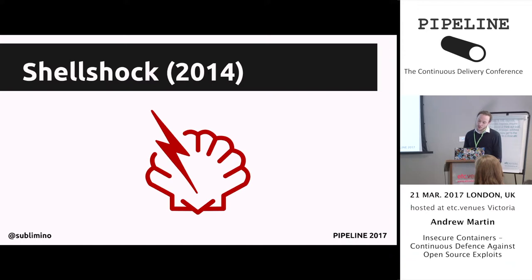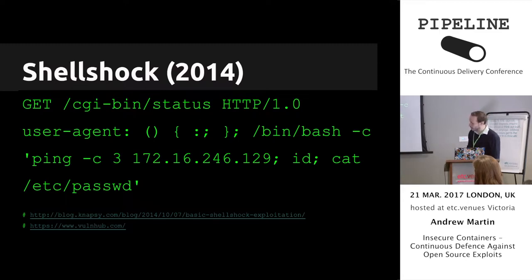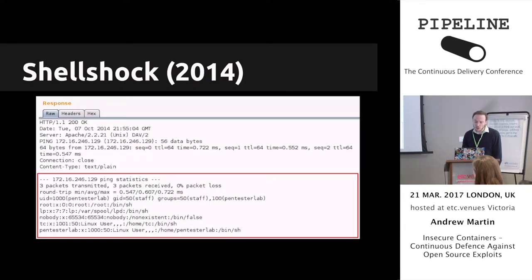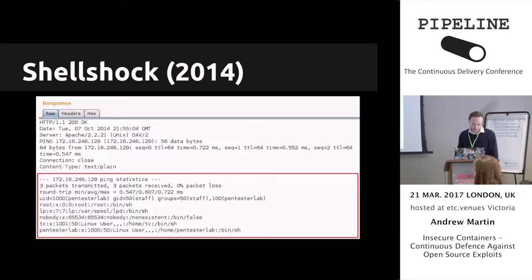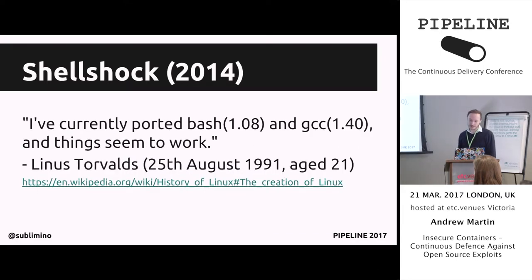Debian and Ubuntu are less vulnerable because their default non-interactive shell is bin-dash. Here's a demo HTTP request from VulnHub against a CGI application. The first line is the target path. The user-agent line contains the exploit payload: parentheses for a function definition, the function defined as a no-op within curly braces, and then the command to run — invoking a shell, then ping, id, and cat /etc/passwd. The server's response shows ping statistics, the call to id, and the contents of the password file. You would only see this attack if you were logging HTTP headers, which is extremely rare. This bug was introduced with the initial implementation of function exporting on the 5th of August 1989 by Brian Fox, Bash's original author — before HTTP existed, before the web was born, or before Linux was released.